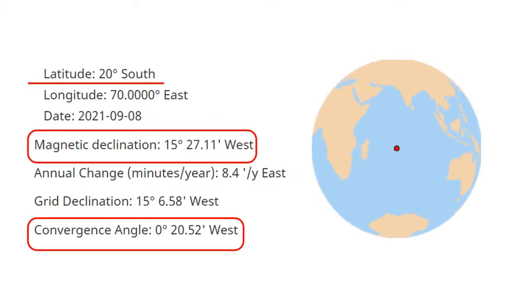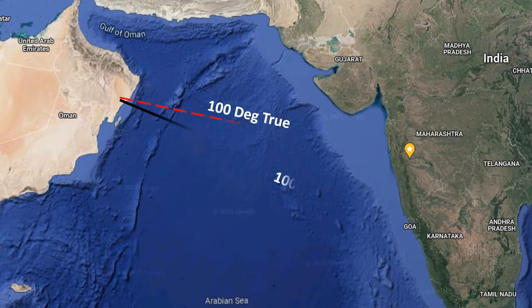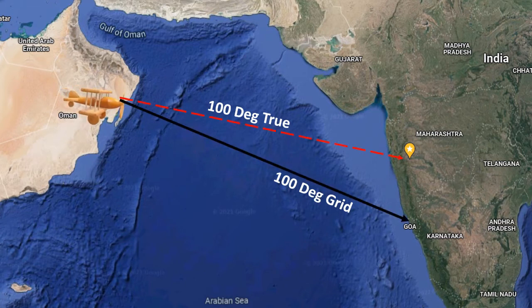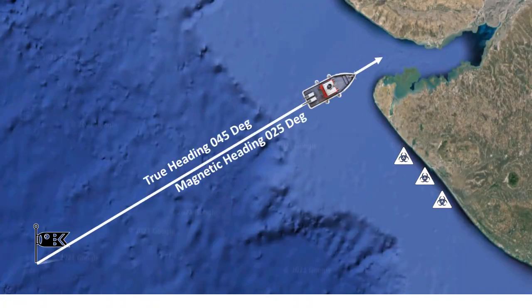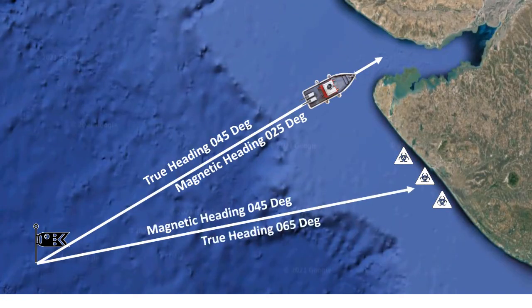Let's now see a practical example. You want to fly from Muscat to Mumbai and you have been given a heading of 100 degrees to follow. You don't know if the heading given to you is with reference to grid or true north, and you could very well end up in Goa instead of Mumbai. Always be sure about your heading or you may end up in the wrong place.